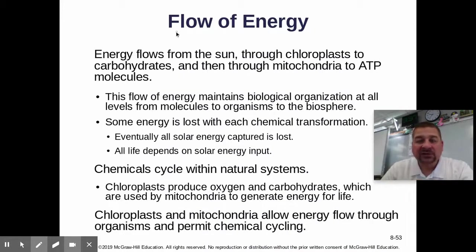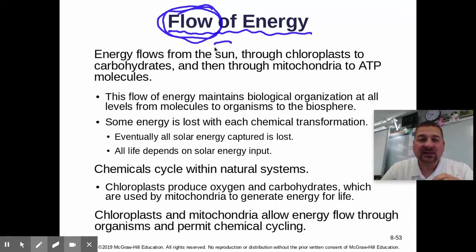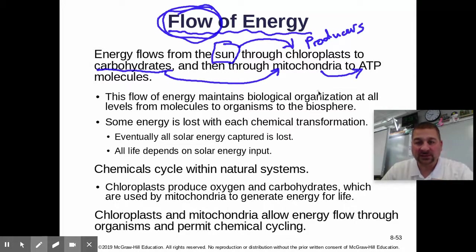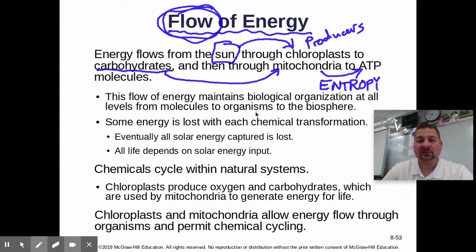It's also important to remember that energy flows. There's a flow of energy through ecosystems, starting with the sun into the chloroplasts in autotrophs or producers — whether that's plants, algae, cyanobacteria, or phytoplankton — producing carbohydrates that are then used by plants, animals, or other consumers, flowing into the mitochondria, then to ATP and used for cell processes. This flow of energy helps combat entropy — that tendency towards disorder and randomness — and this constant input from the sun helps maintain biological organization.